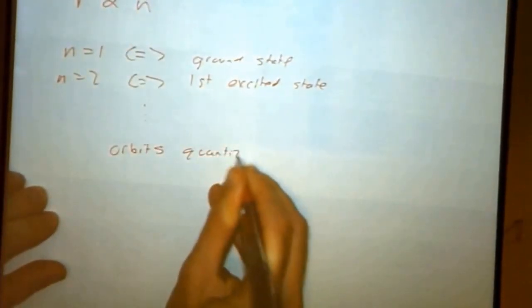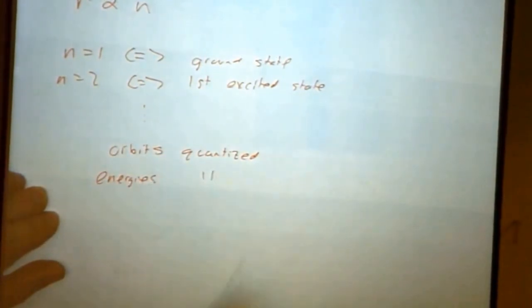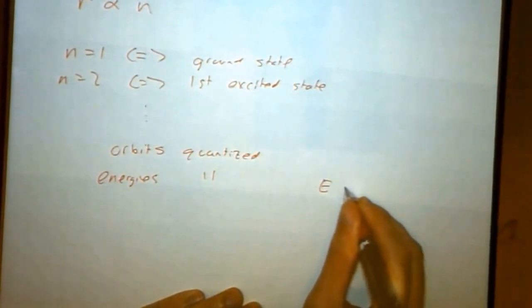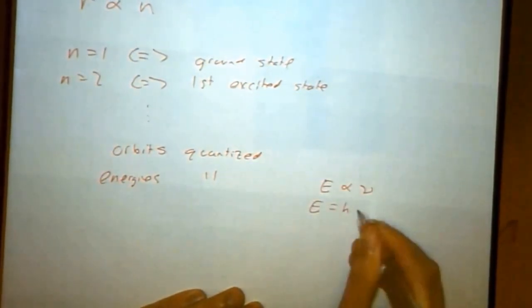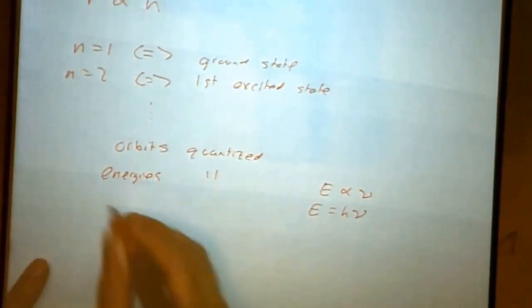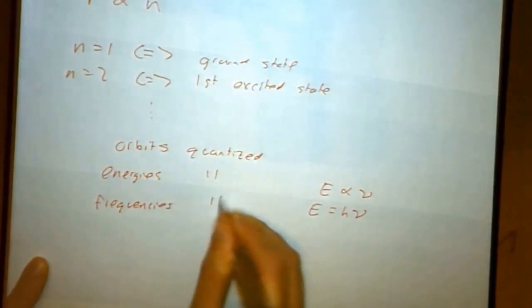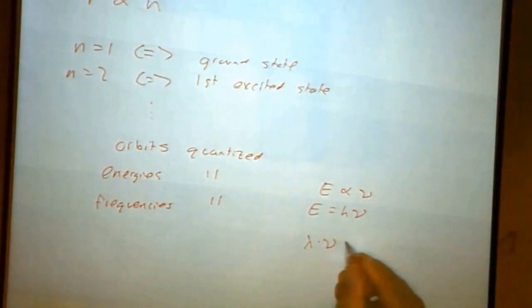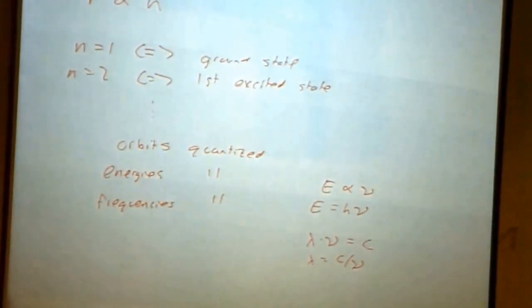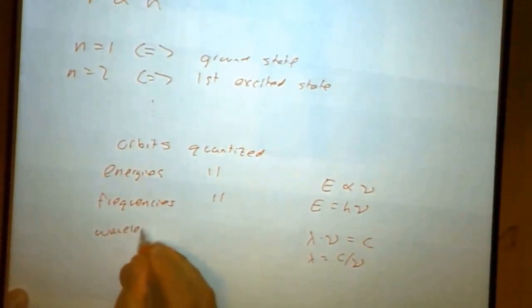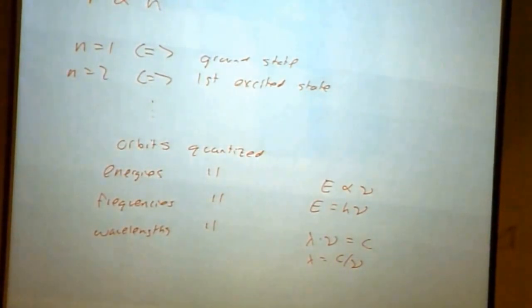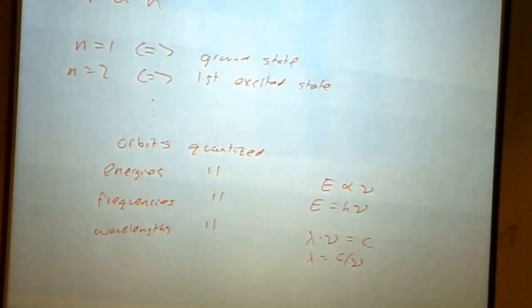So we know that the orbits are quantized. That means the energies are quantized. And we know energy is proportional to frequency. With light, E is equal to h times frequency. So if the energies are quantized, the frequencies are quantized. And we have our other expression, wavelength times frequency is the speed of the wave, which for light is constant. So wavelength is equal to c divided by ν. So if the frequencies are quantized, the wavelengths are quantized.